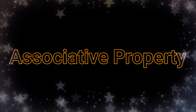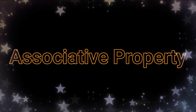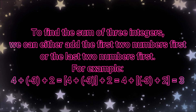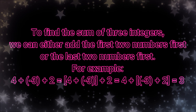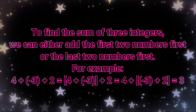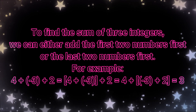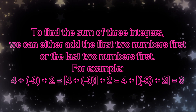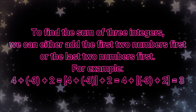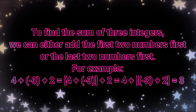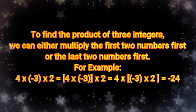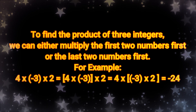And the fourth property of integers is the associative property. To find the sum of three integers, we can either add the first two numbers first or the last two numbers first. For example, 4 plus negative 3 plus 2 — you can add first 4 plus negative 3, and then later on add 2. Or you can do 4 plus, and then add the last two numbers, which is negative 3 plus 2, and the answer will give you 3. To find the product of three integers, we can either multiply the first two numbers first or the last two numbers first.